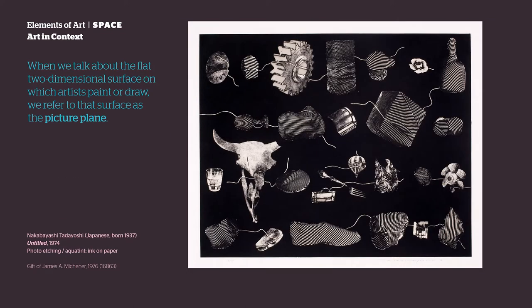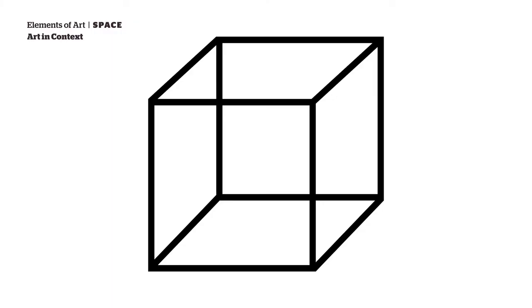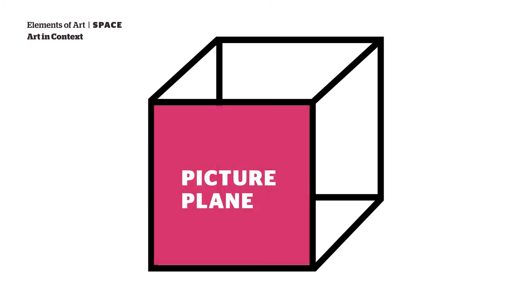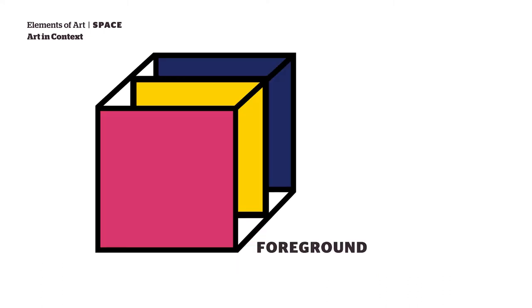When we talk about the flat two-dimensional surface on which artists paint or draw, we refer to that surface as the picture plane. There is an imaginary area behind this picture plane that is referred to as the picture space. Think of a transparent cube — the side nearest to you is the surface picture plane, and from the front to the back of this cube, we can talk about three different zones.